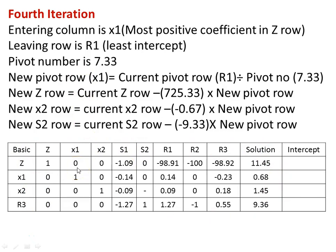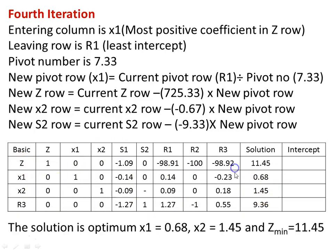Looking at the non-basic variables in the final table: x1=0, x2=0, s1=−1.09, s2=0. There is no positive value among the non-basic variables for a minimization problem, so this is the optimum solution. The result is x1 equal to 0.68, x2 equal to 1.45, and z minimum equal to 11.45. That is the answer for the minimization type of problem.